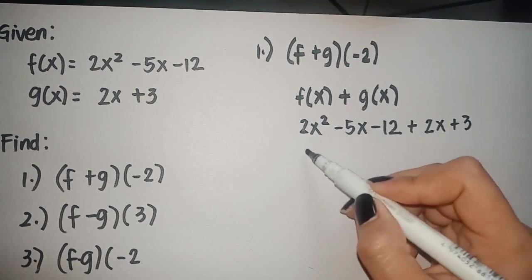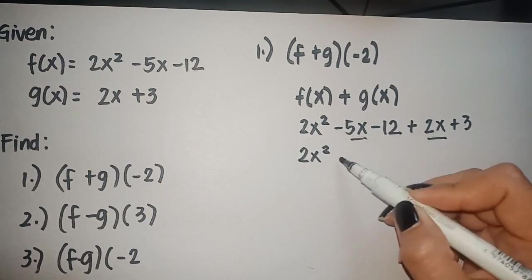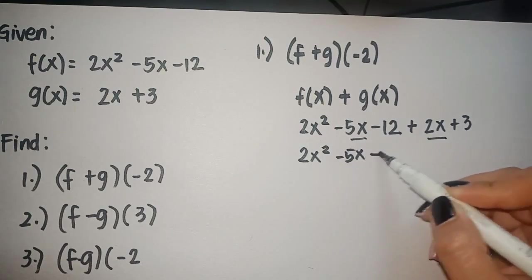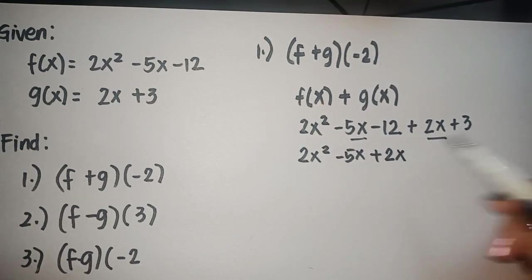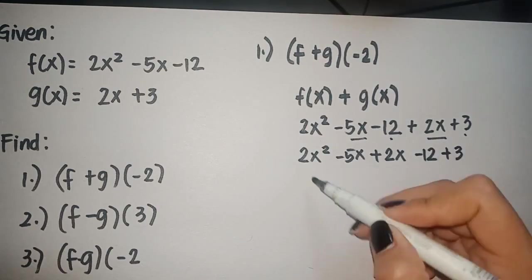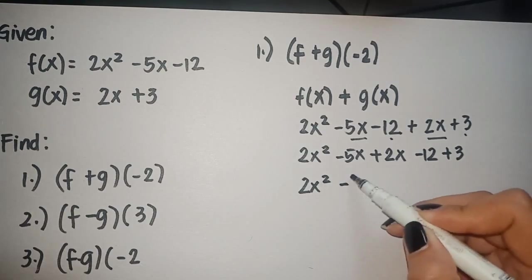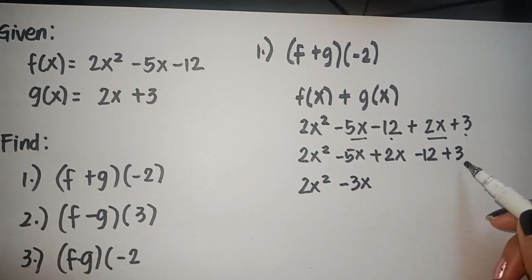So for the next step, simplify by combining similar terms. We have 2x squared minus 5x plus 2x minus the constant term, 12, plus 3. So unlike sign, so subtract, we have negative 3x minus 9.